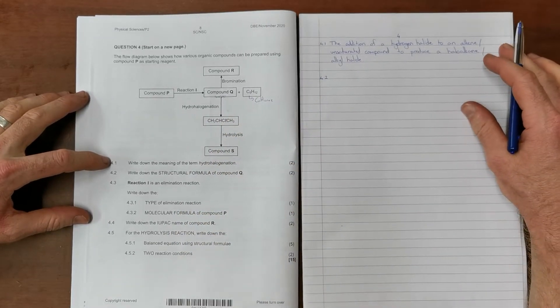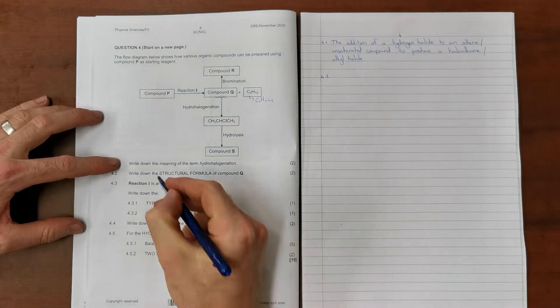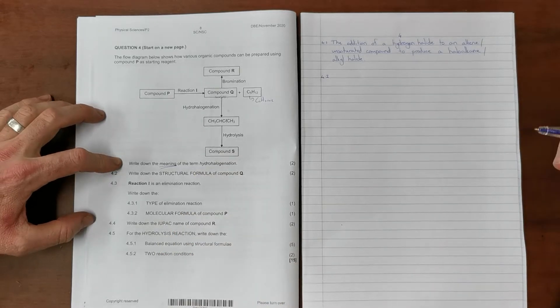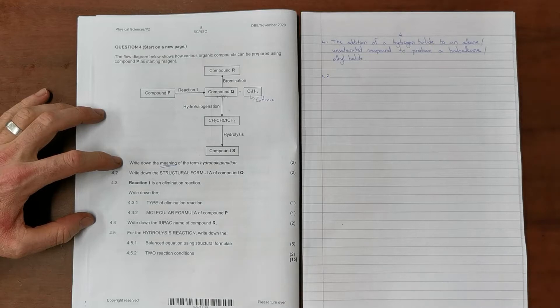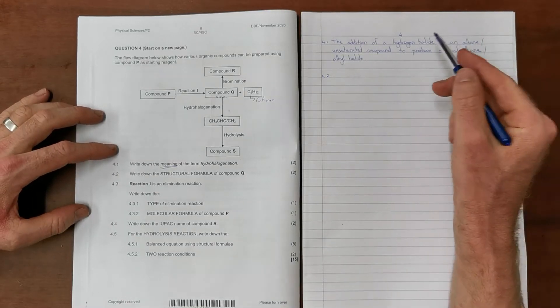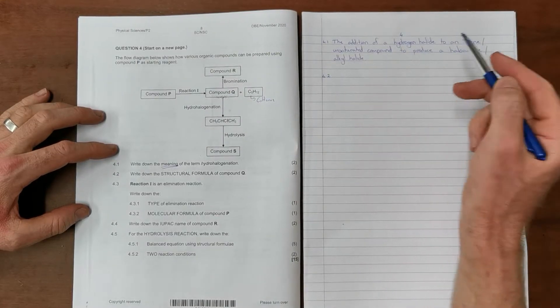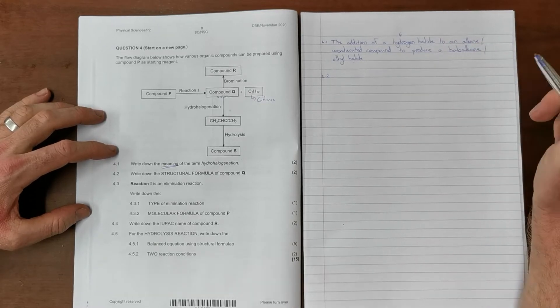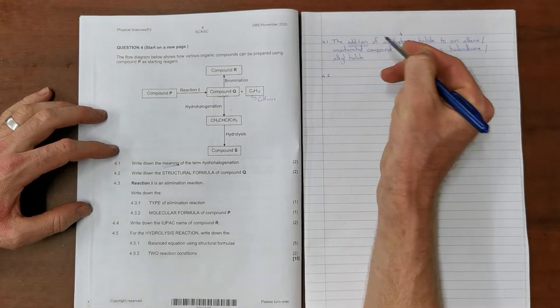Question 4.1 reads: write down the meaning of the term hydrohalogenation. Note that we are not expected to know the definition for hydrohalogenation, so a general explanation is accepted. The correct explanation would be something along the lines of the addition of a hydrogen halide to an alkene or unsaturated compound to produce a haloalkane or alkyl halide. Important here to specify that this is a type of addition.